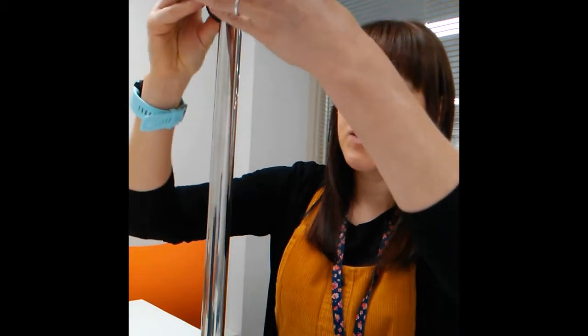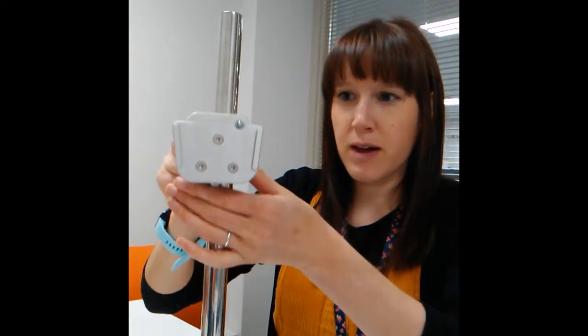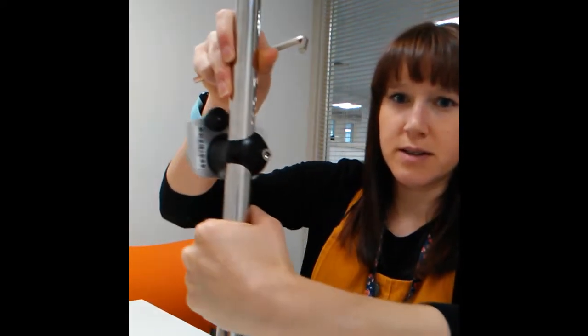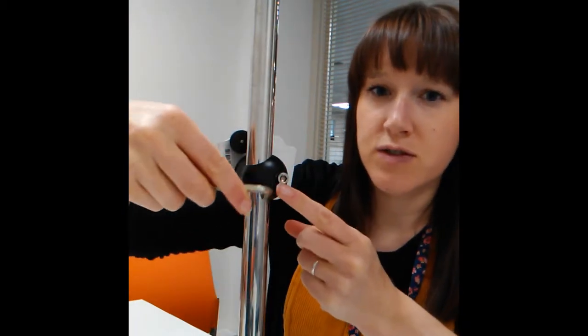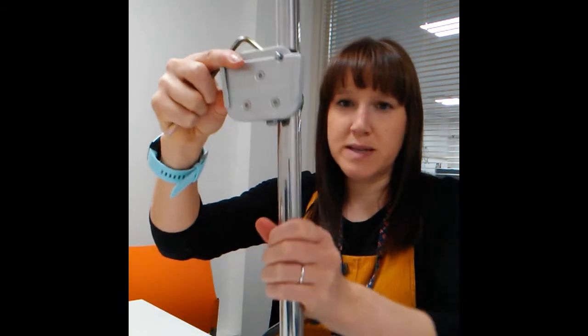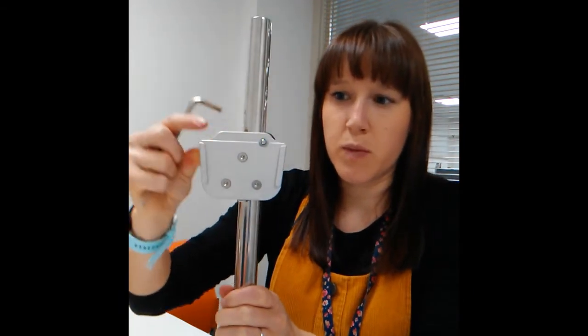And the last thing to do is just pop your quick release onto the pole. So that should just slot on like that. And then again you just take your allen key and just tighten it up. I'll show you where I was doing that. So on this side you've got a little screw here. So this bit you can move up and down depending on where you need the device to be positioned.